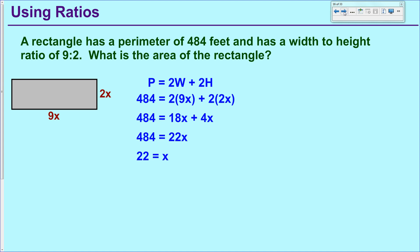So simplify that. Solve it. You'll get down to x equals 22. Now it ultimately asked for the area of the rectangle, which means that you need to figure out the actual dimensions of the rectangle. So for the width of the rectangle, take 9 times 22. For the height of the rectangle, take 2 times 22. You get 198 and 44.